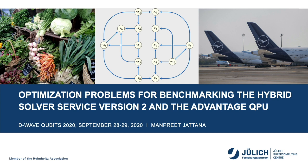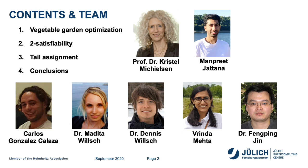Welcome. Today we are presenting Optimization Problems for Benchmarking the Hybrid Solver Service Version 2 and the Advantage Quantum Processing Unit, presented from the Supercomputing Center in Forschungszentrum Jülich. The three different optimization problems we are looking at are Vegetable Garden Optimization, 2-Satisfiability, and Tail Assignment. At the end, we will be presenting the conclusions we have drawn from our benchmarking. This work is a team effort.